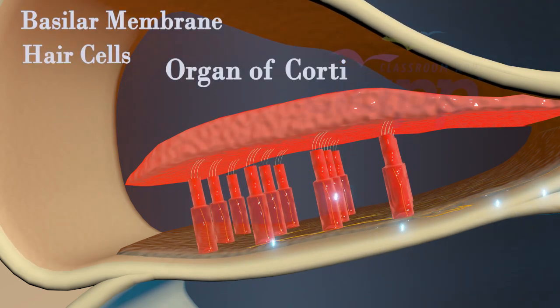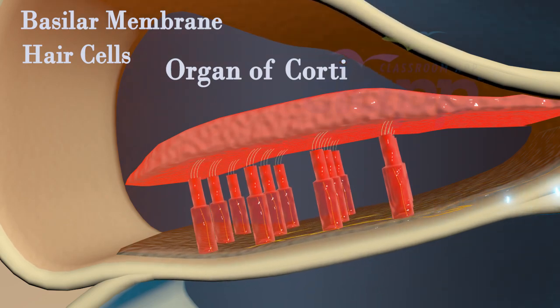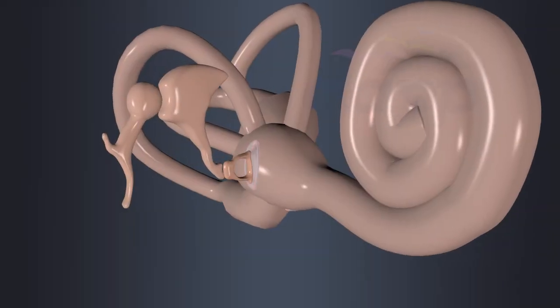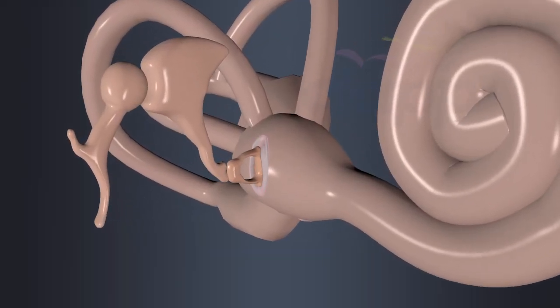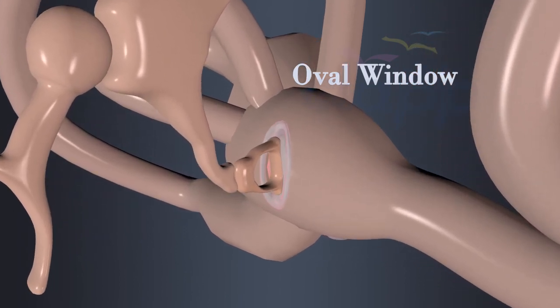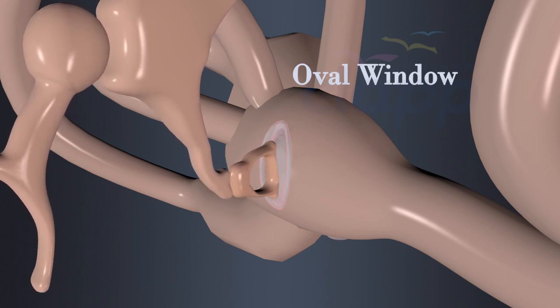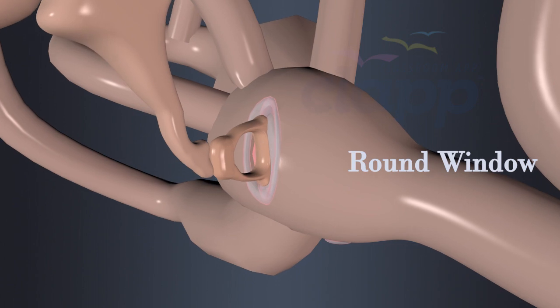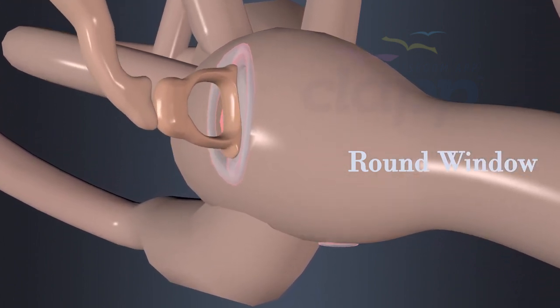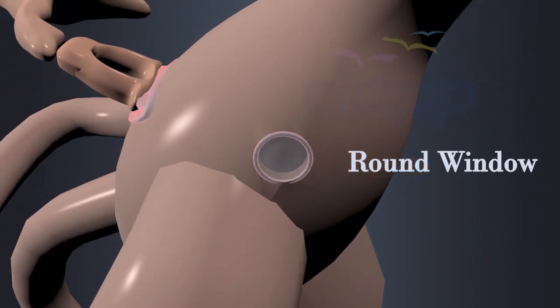Basilar membrane and the hair cells are together known as the organ of Corti. There are two openings that connect middle ear with inner ear. Oval window is connected with stapes and transmits sound vibrations from the ossicles to the fluid-filled cochlea. The round window serves as a pressure release valve for the fluid inside the cochlea, allowing for the displacement of fluid as the cochlea responds to the sound vibrations.